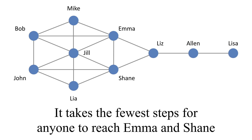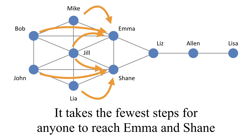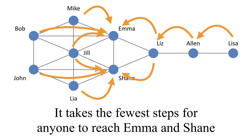They're equivalently important, and it's simply the fact that within this network, for everyone to be connected to them, it takes the least number of hops to get to Emma and Shane.